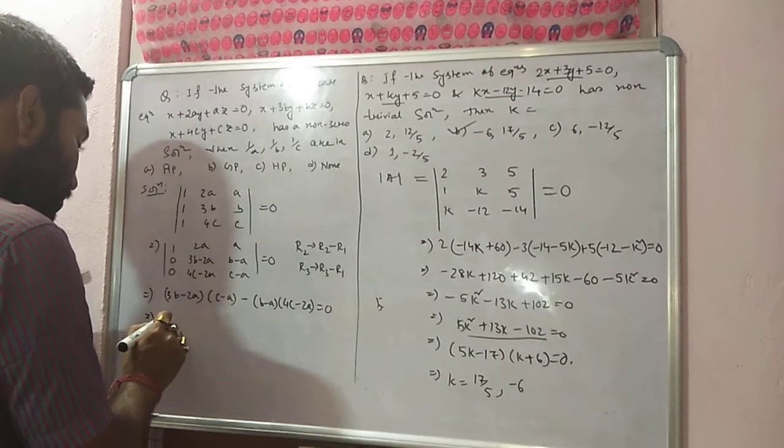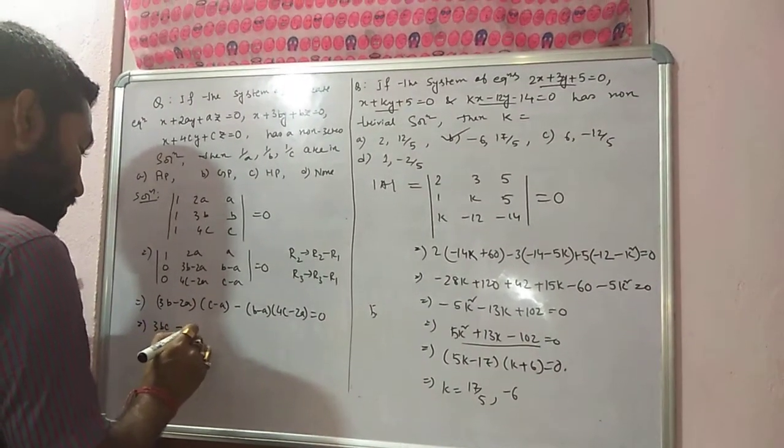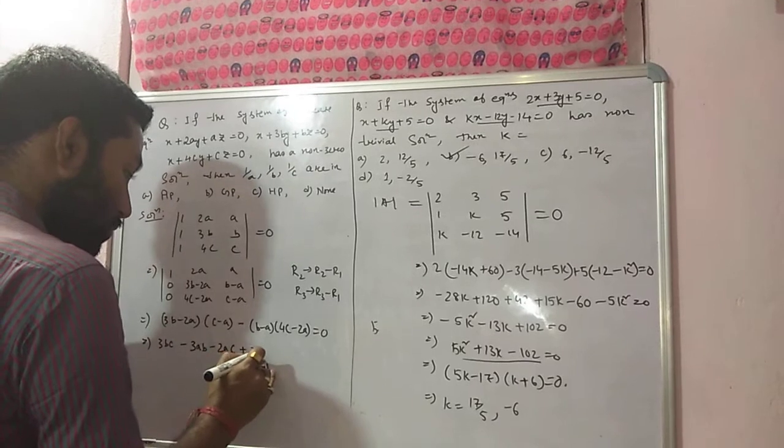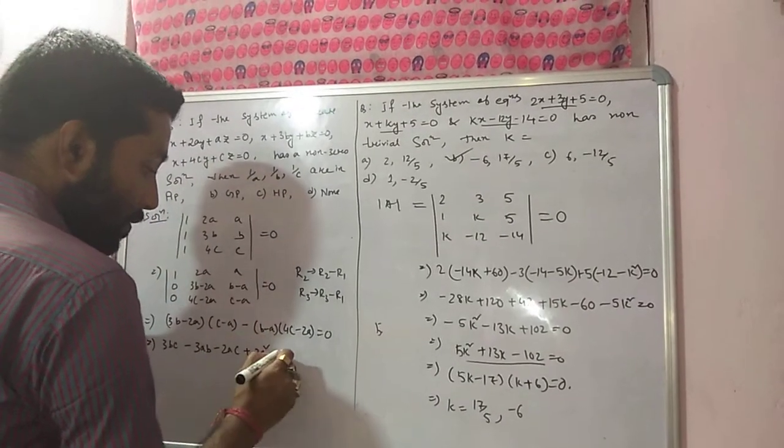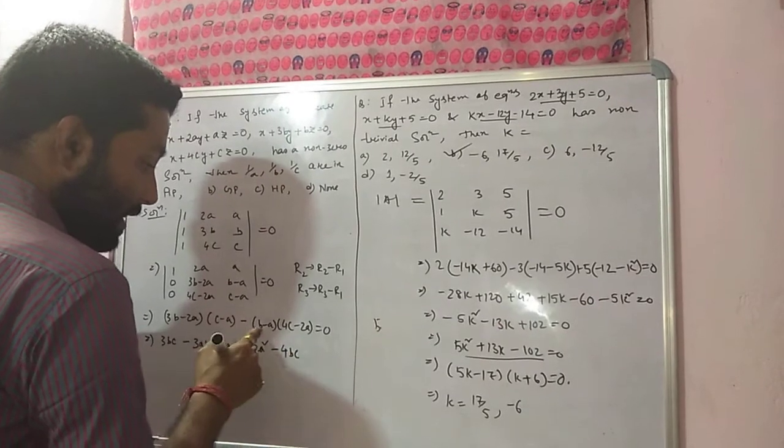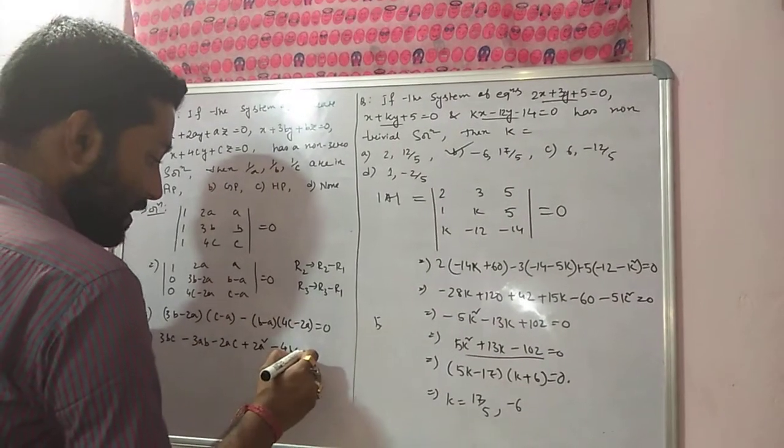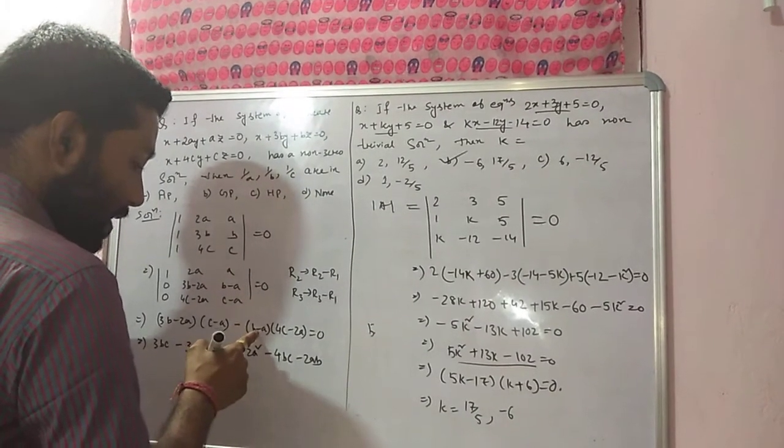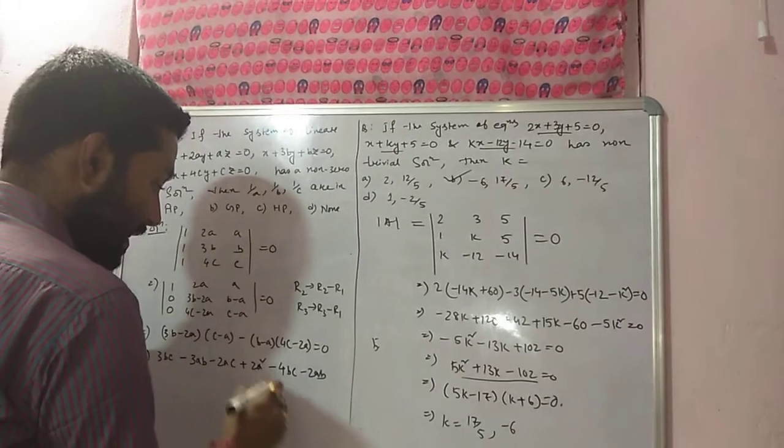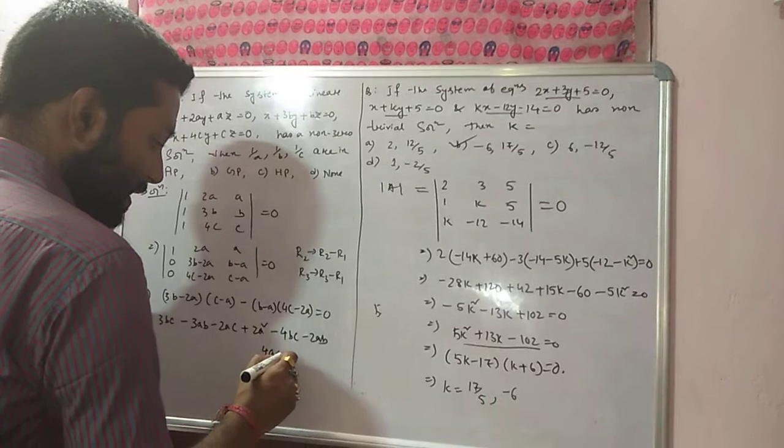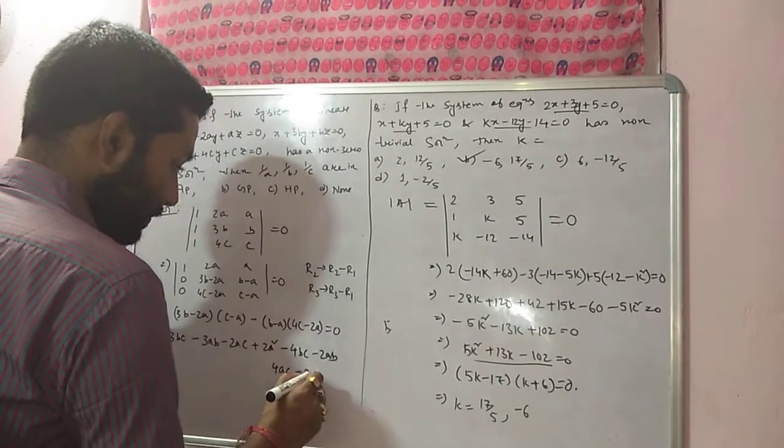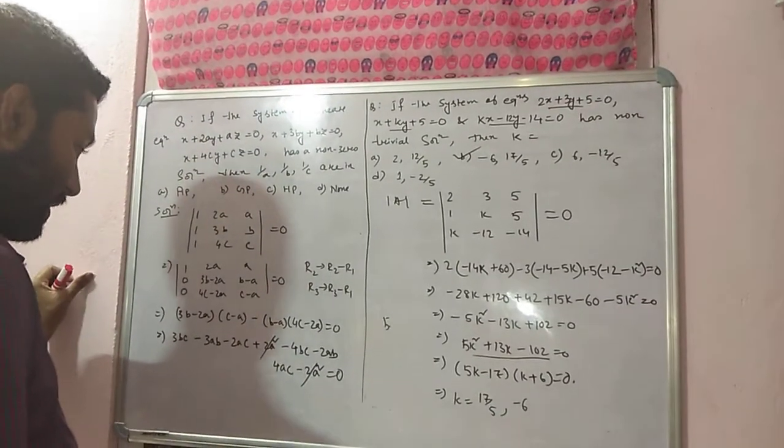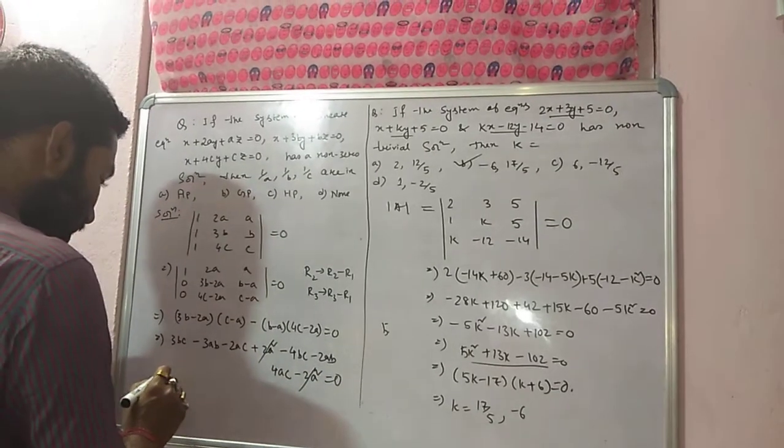Now we expand this: 3BC minus 3AB minus 2AC plus 2A square minus 4BC minus minus becomes plus 2AB minus minus plus 4AC minus minus plus minus 2A square.